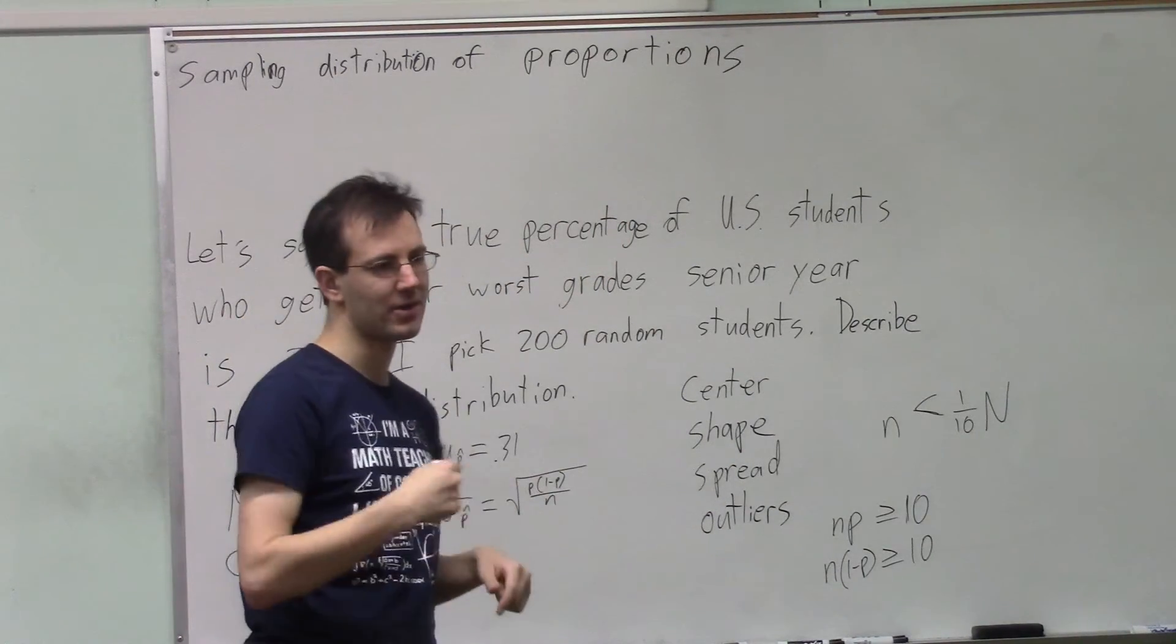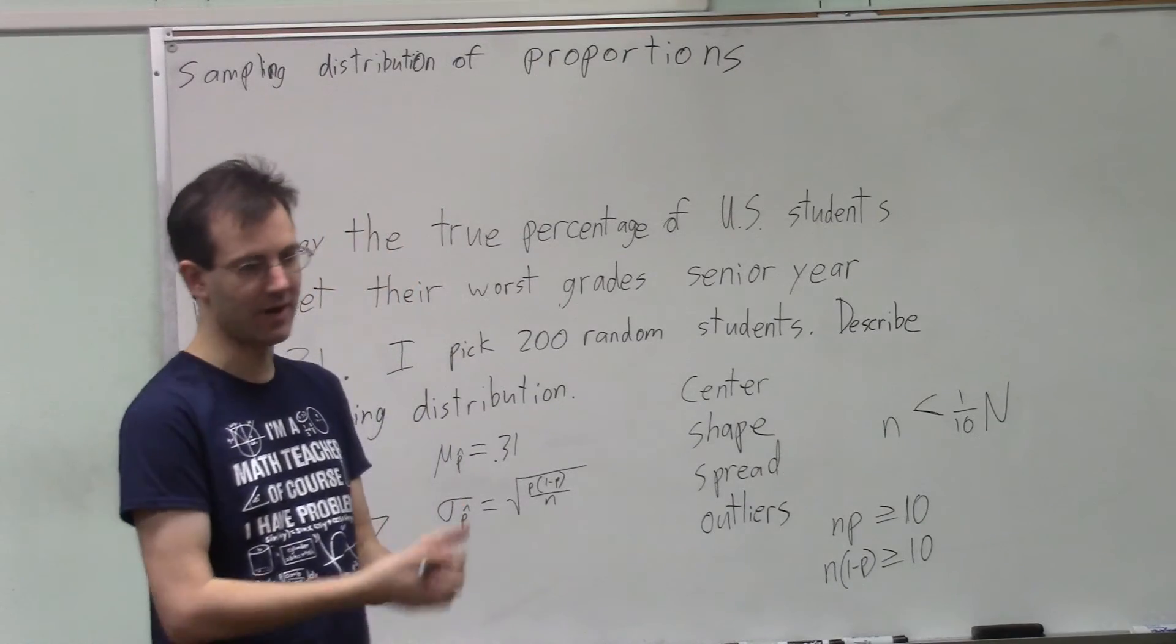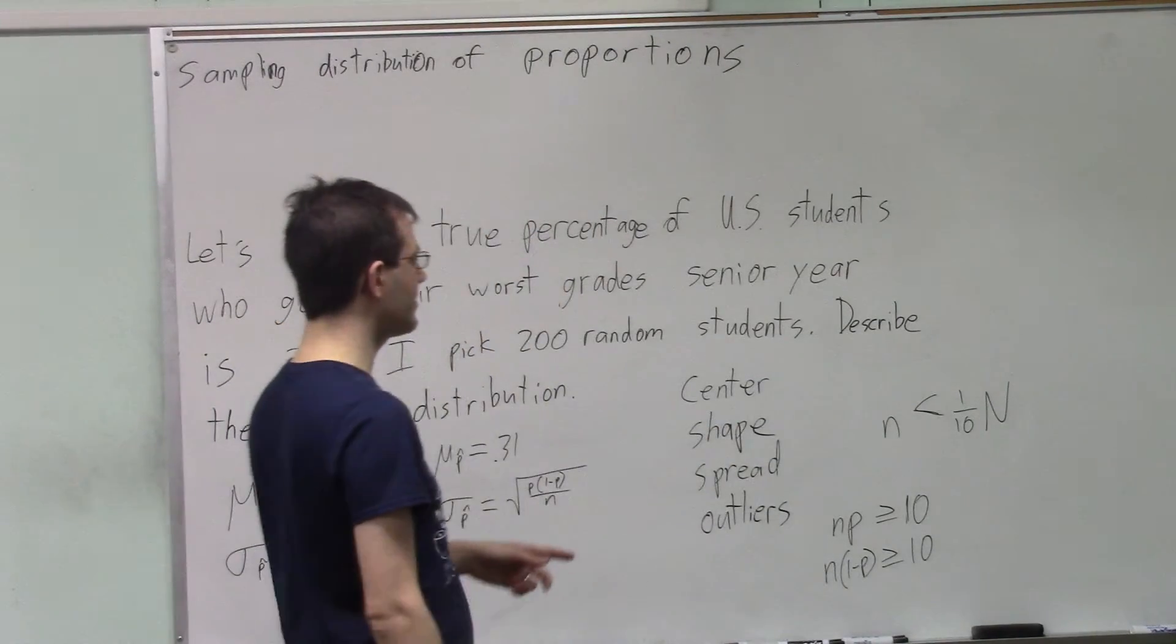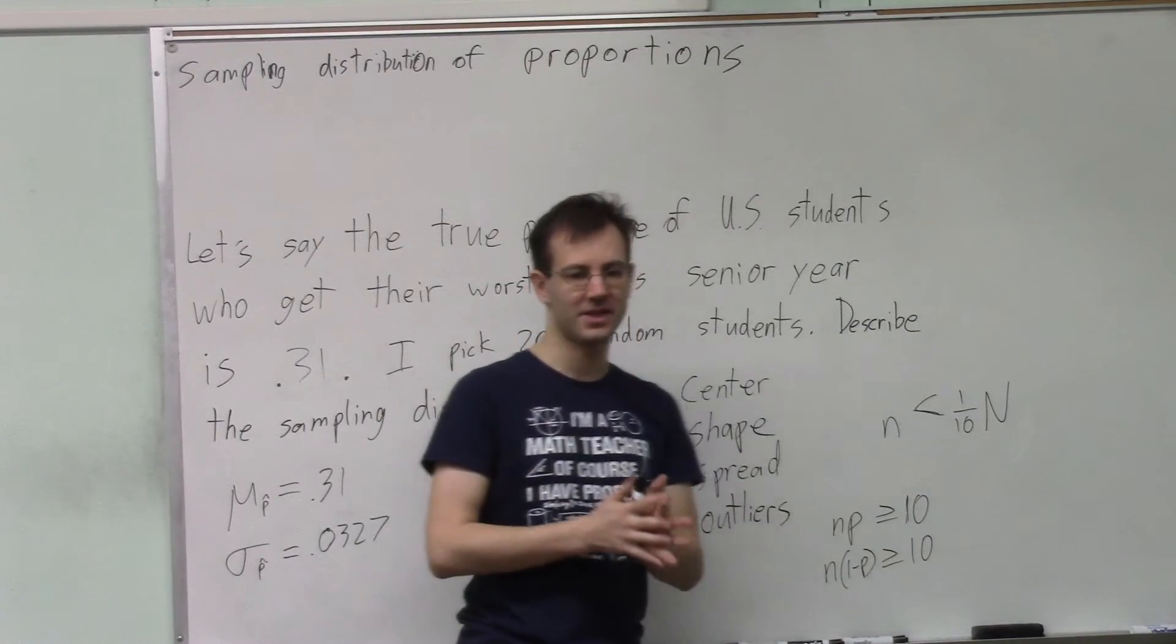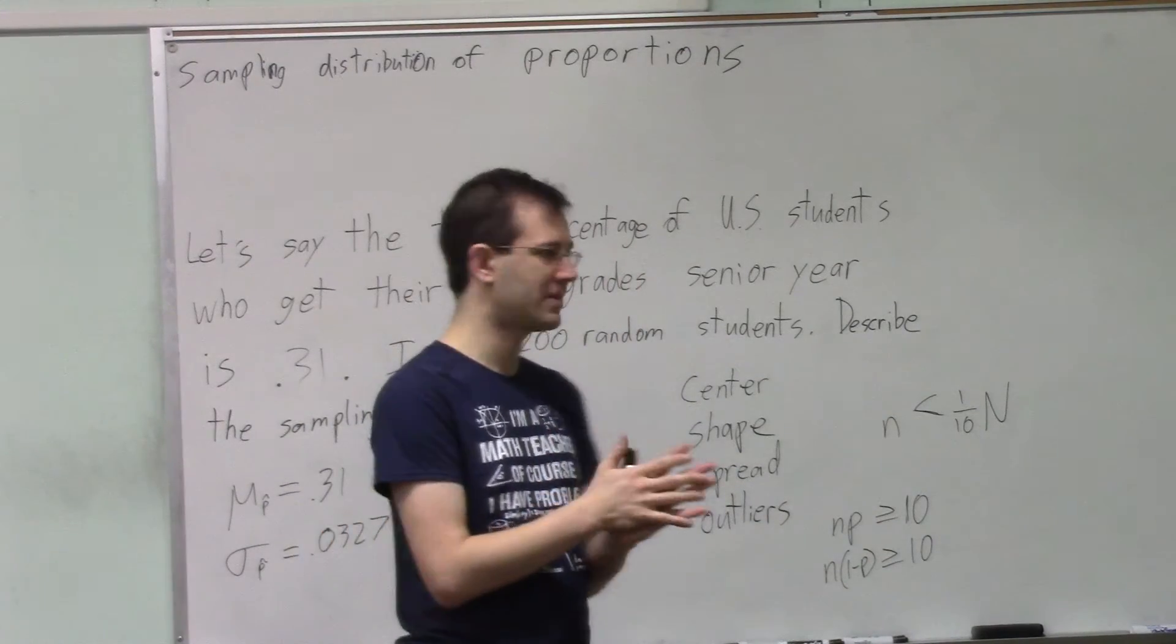If we keep picking green socks, don't we run out of green socks? Don't we run out of spades in a deck of cards? Well, as long as you have picked less than 10% of the whole population, the people are considered independent.